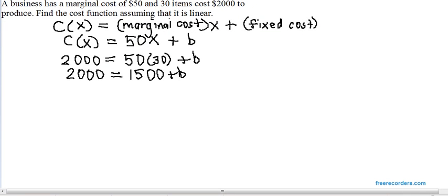And then to solve this equation for b, we just subtract $1,500 from both sides of the equation. On the left side, $2,000 minus $1,500 is $500.